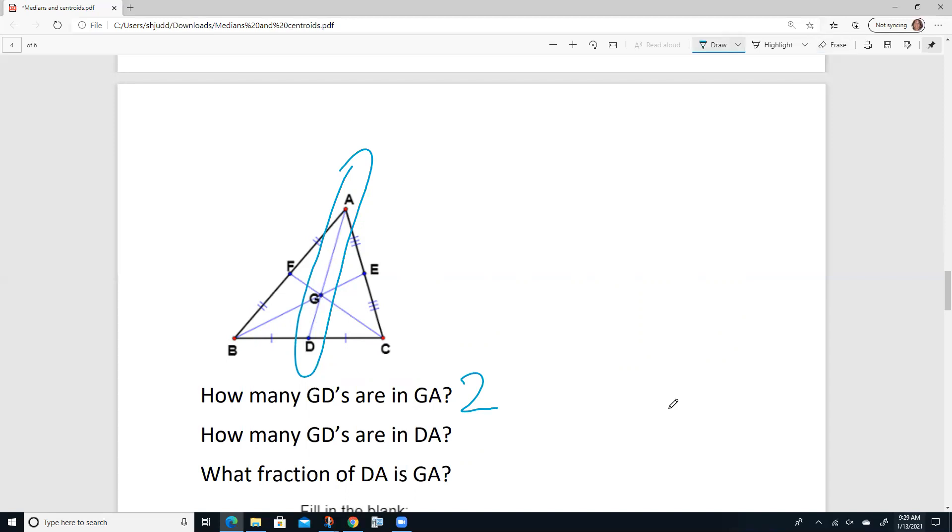Now, I got a question for you. If there's one here and there's two here, how many are there from D to A? Well, one plus two is three.